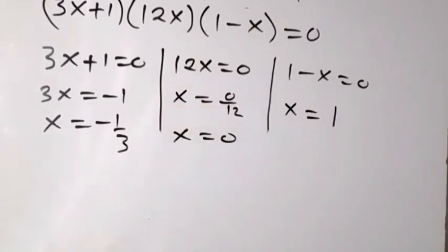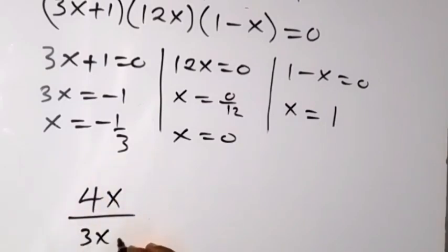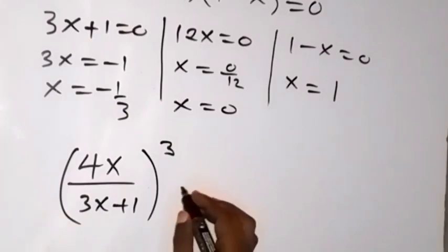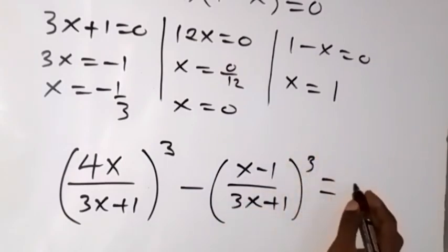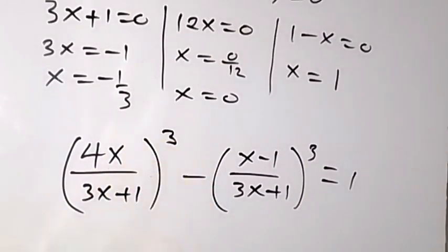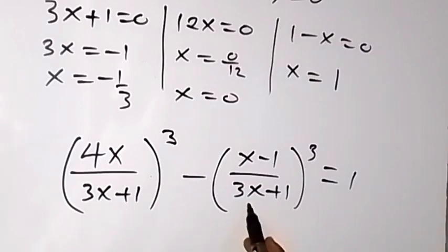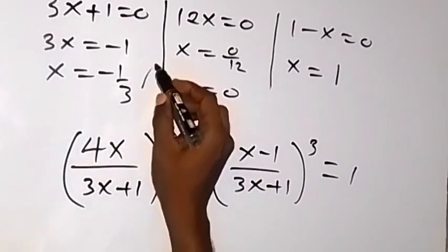We check which solutions satisfy the original equation: (4x/(3x+1))³ - ((x-1)/(3x+1))³ = 1. For x = -1/3, substituting into the denominator gives 3(-1/3)+1 = -1+1 = 0. Dividing by 0 gives an undefined fraction, so x = -1/3 does not satisfy the equation.